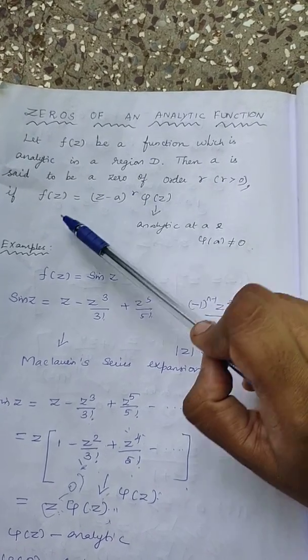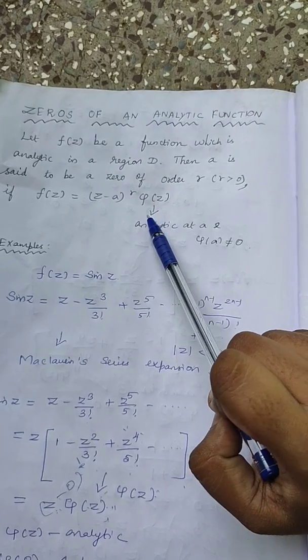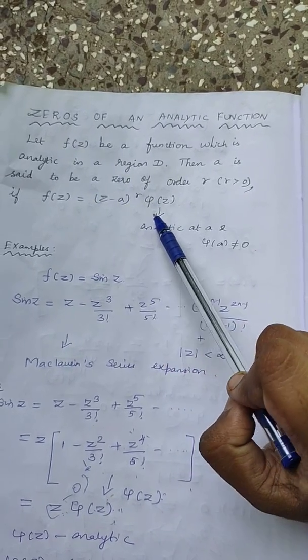So what do you think if F of Z is equal to A here? If Z is equal to A, this value would become 0. That is F of A is equal to 0.